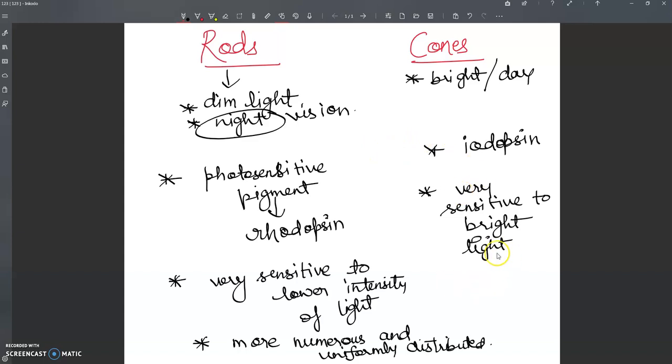If we talk about cones, the third point is that they are sensitive to bright light. Cones are less numerous and dispersed.